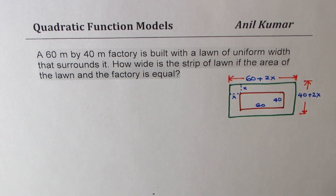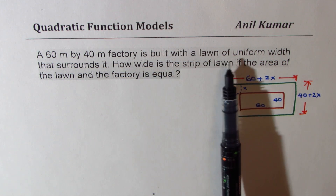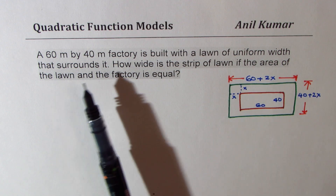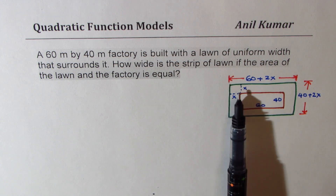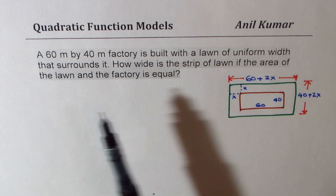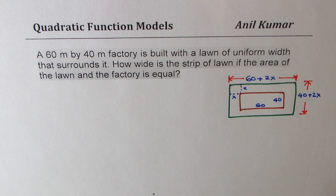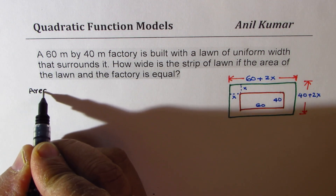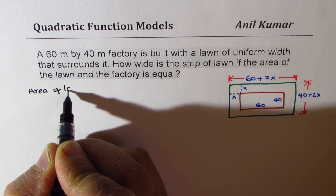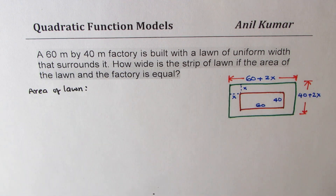Now we are also given that the area of the lawn and area of the plot is the same. How wide is the strip of the lawn? That means we have to find x if the area of the lawn and the factory is equal. So what is the area of the lawn? The area of the lawn is the outside area minus the inside area.